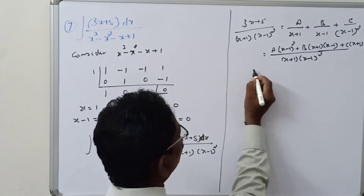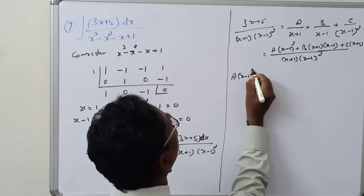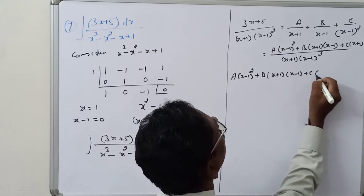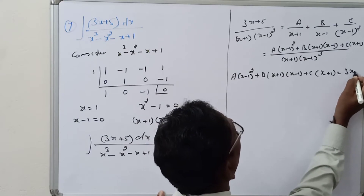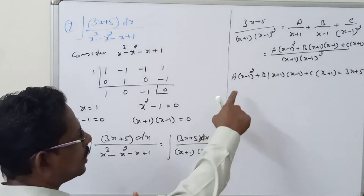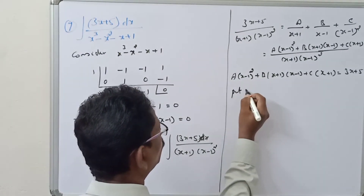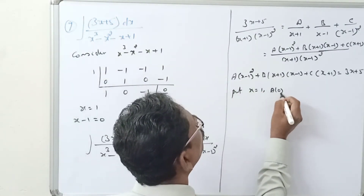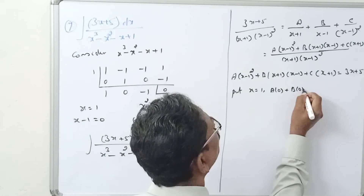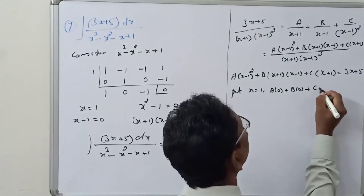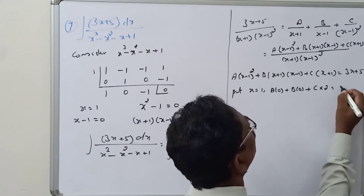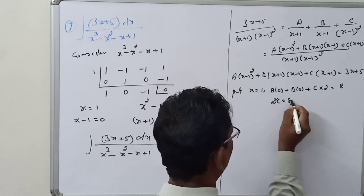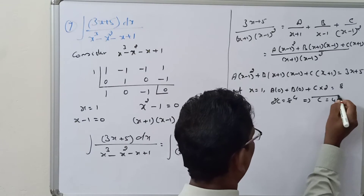Equating numerators: A(x - 1)² + B(x + 1)(x - 1) + C(x + 1) = 3x + 5. Now put x = 1: A×0 + B×0 + C×(1 + 1) = 3(1) + 5, so 2C = 8, therefore C = 4.